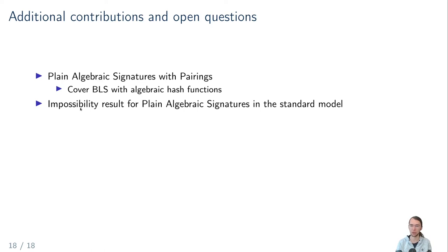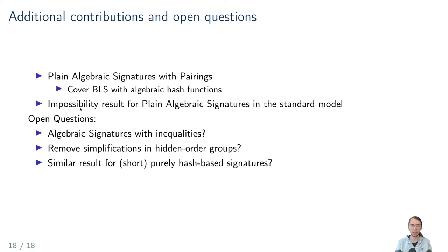There are still some open questions. Algebraic signatures are a bit limited — for example, we don't consider inequalities, which could also be checked in a generic group model. Another open question is whether we can remove the simplifications made in the hidden order group setting. And similar results for short purely hash-based signatures would also be interesting, because with groups and random oracles we can build short signatures, but from groups alone we can't, and from hashes we only know long signatures. Thank you all for your attention, and if you have any questions, feel free to ask them at the conference.